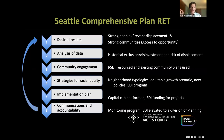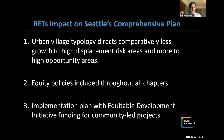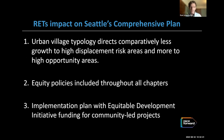What happened? The toolkit led to an urban village typology that directed comparatively less growth to high-displacement-risk areas and more to high-opportunity areas. A caveat: those high-opportunity areas were narrowly defined as the ones with good transit, so it was more about where transit was going. But nonetheless, those concepts took hold and influenced where we were distributing housing and job growth. The equity policies were included throughout all chapters — not just land use and growth — and we had an implementation plan with priorities for the equitable development initiative to fund community-led projects.